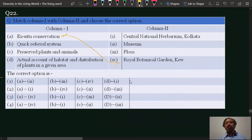Botanical gardens and zoological parks are examples of ex situ conservation. Quick referral system is the herbarium, and here it is Central National Herbarium, Kolkata.